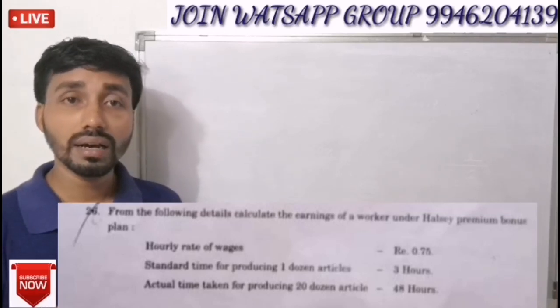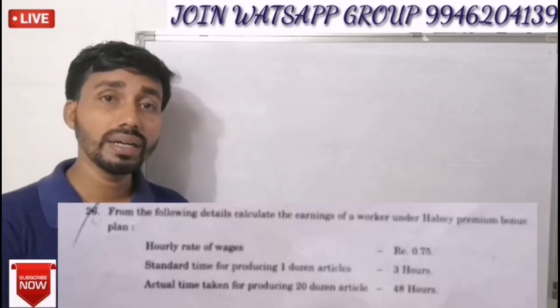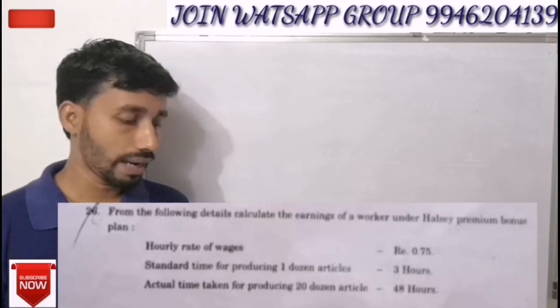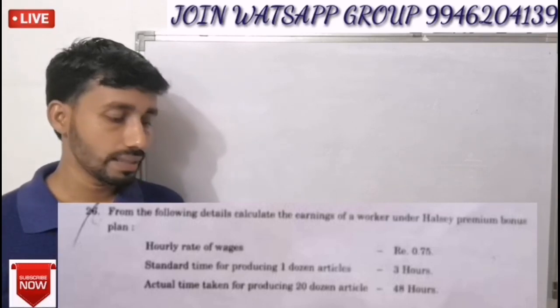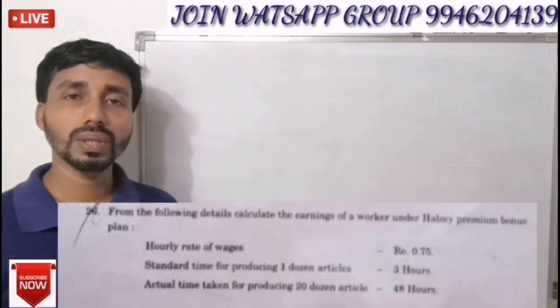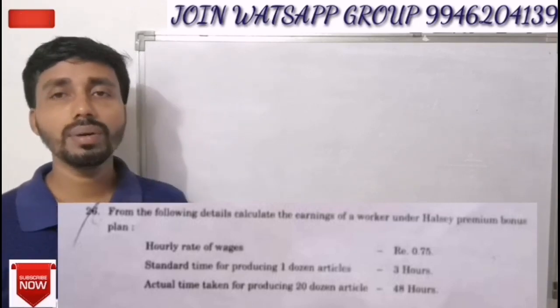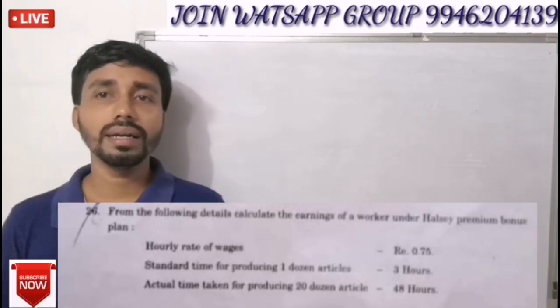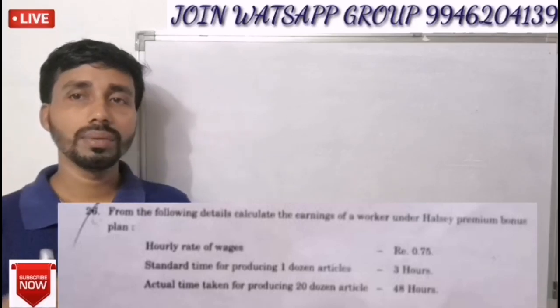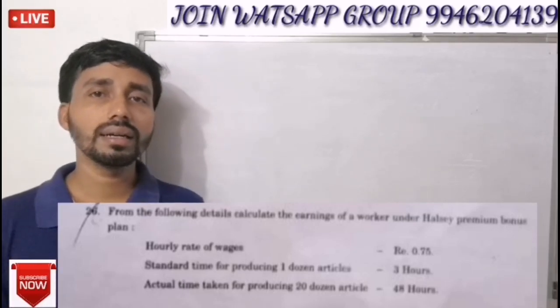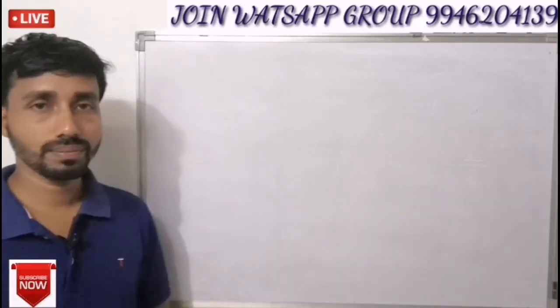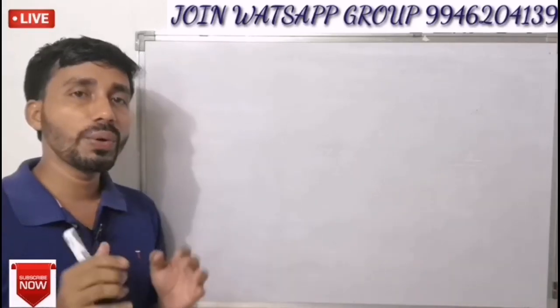So we know the standard is for 1 dozen, and we know the actual. How do we know the standard for 20 dozen? We need to convert the standard time for 20 dozen.